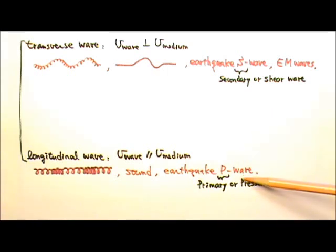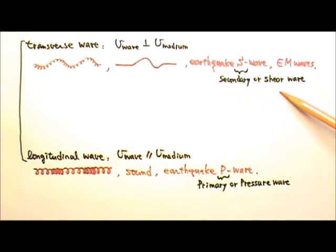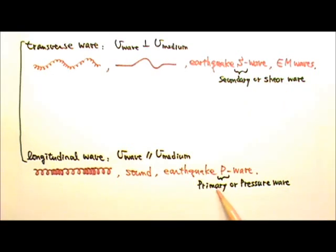The P waves are primary or pressure waves. The S waves are the secondary or shear waves. The longitudinal P waves travel faster than the S waves, hence the name primary.